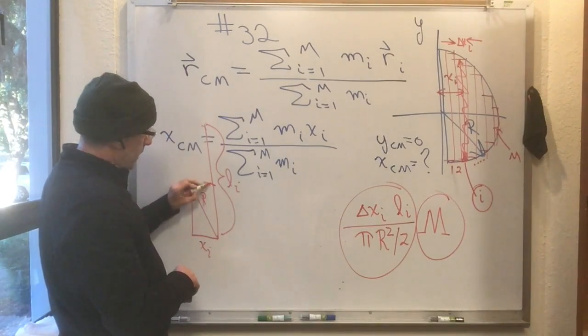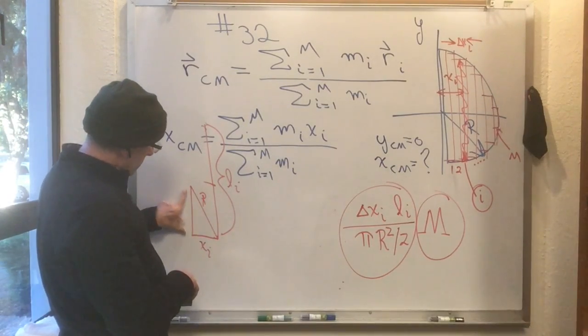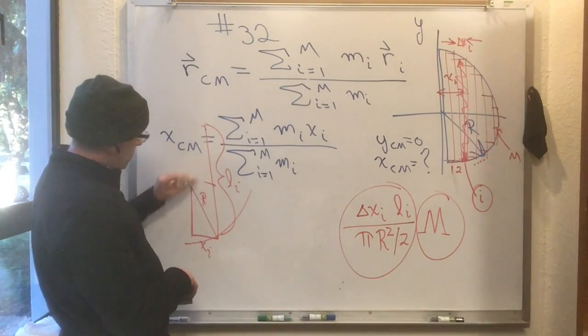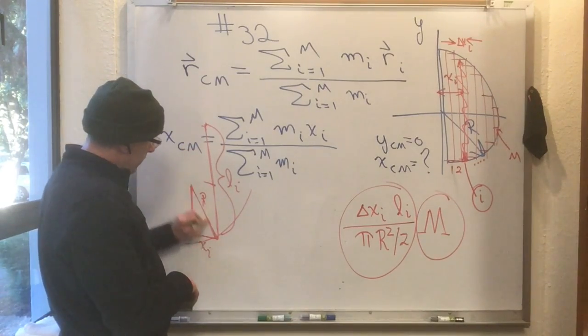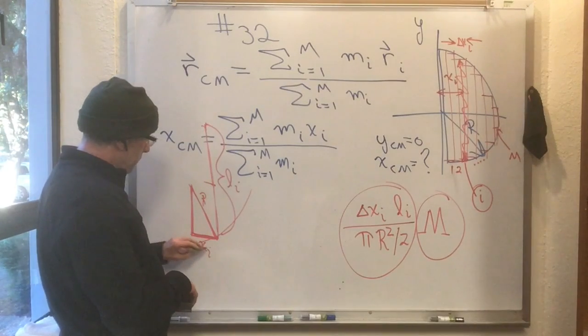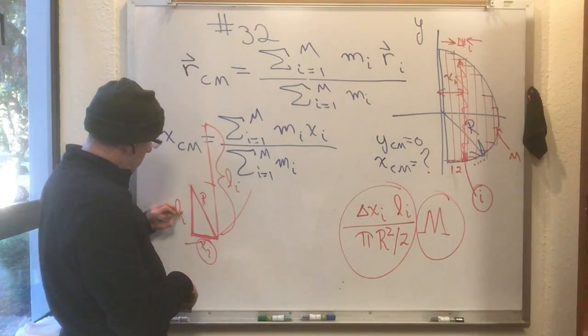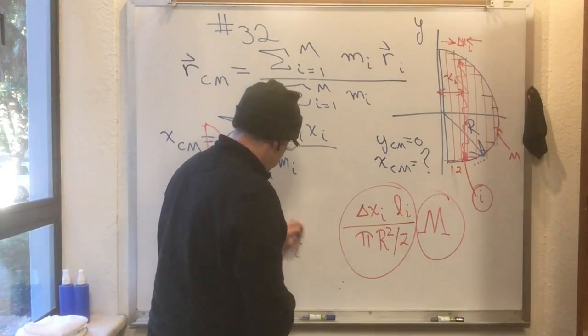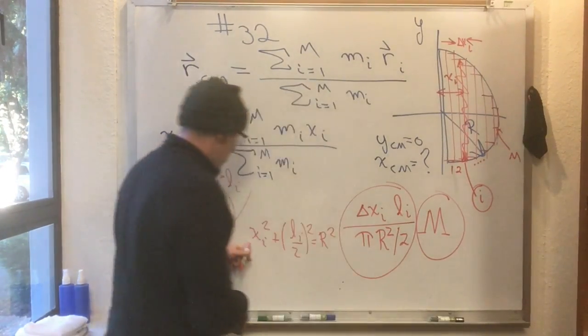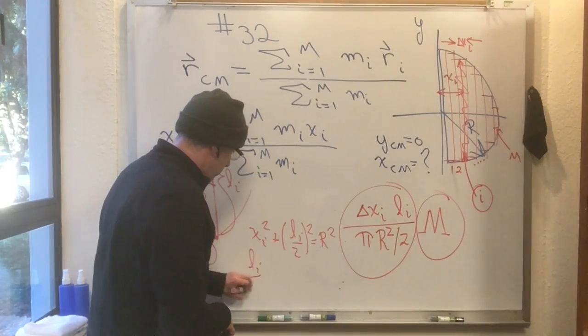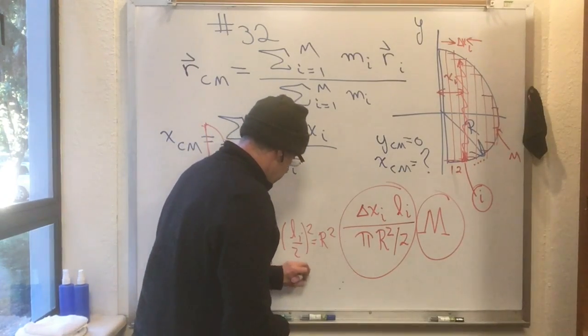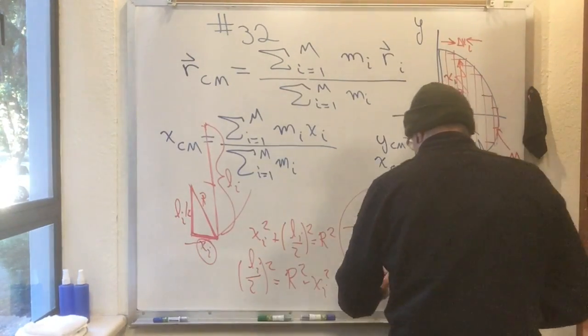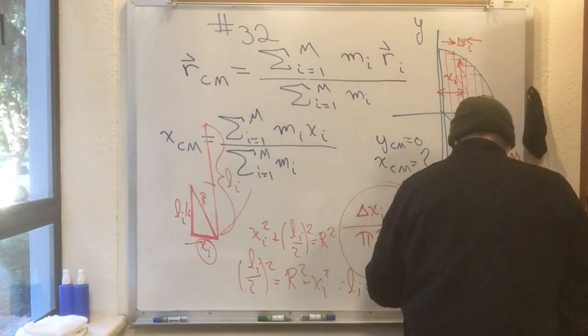This length that I'm looking for, well, half of it is this length right here. This is the circle of radius r. Half of this total length is this length right here. That side, of course, is the radius. This side is how far over we've gone x of i. So, we have l_i over 2 here. We have x_i squared plus l_i over 2 squared is equal to r squared. Or, throwing the x_i squared to the other side, we have l_i over 2 squared equals r squared minus x_i squared. Or, that says that l_i is equal to twice the square root of r squared minus x_i squared.